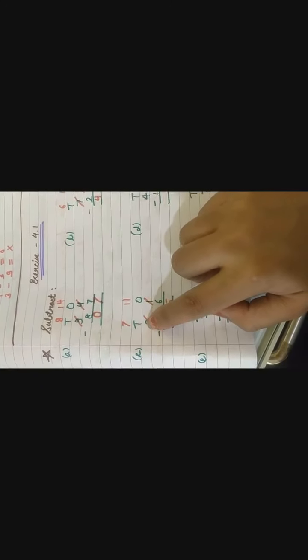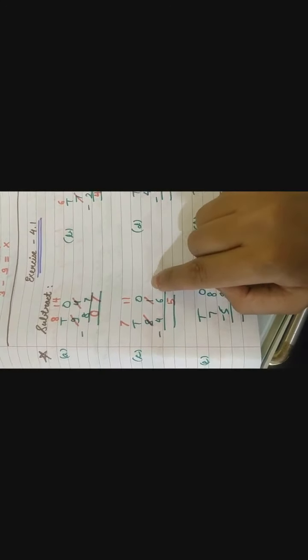Now 7 me se abhi tha 8 tha. We have given borrow to 1. So now we are left with 7. 7 minus 4. Counting 7, removing 4, left with 3. Good.